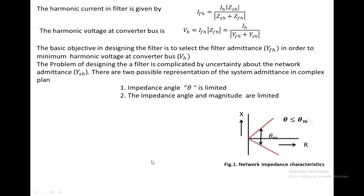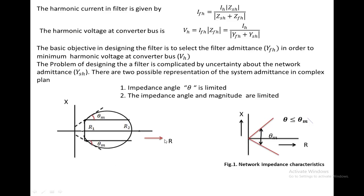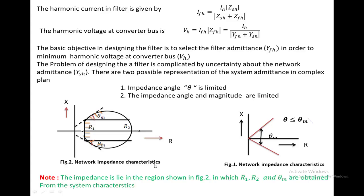The second method limits both the impedance angle and the magnitude. In this method we limit both the impedance angle as well as the magnitude of the system. The first method has fewer assumptions whereas the second method has higher assumptions for both impedance angle and magnitude. To apply the second method, we need a very clear idea about the system impedance or admittance — specifically the values of R1, R2, and theta_M that define the permissible region. The first method does not require as much knowledge of system characteristics.